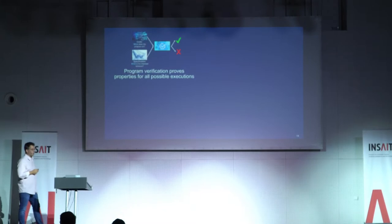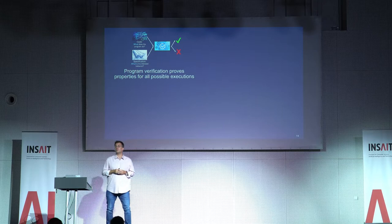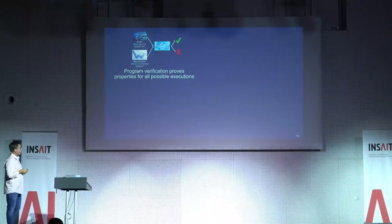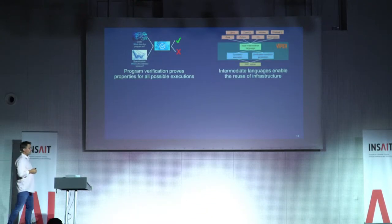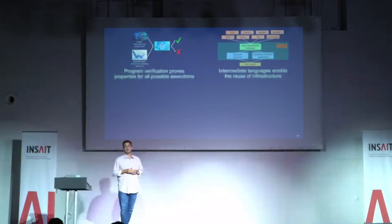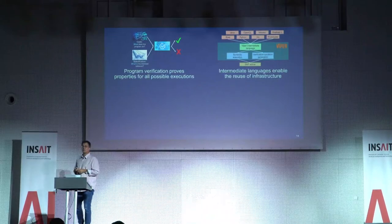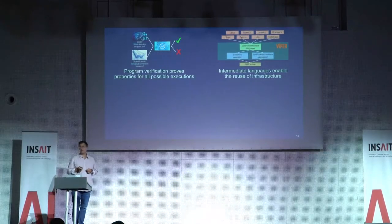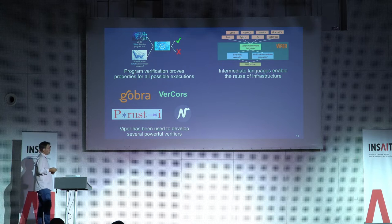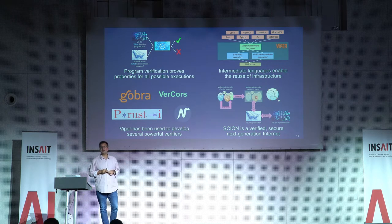Let me summarize. Program verification gives very strong guarantees about a wide variety of software properties. When building a verifier, an intermediate verification language is essential for reusing proof automation effort. The Viper system enables building verifiers for concurrent and heap-manipulating languages, as shown by Rust, Go, Java, and Python verifiers. We can apply this to fairly large projects like the SCION internet architecture, where we've verified a substantial amount of code against a mathematical high-level specification of the protocol.